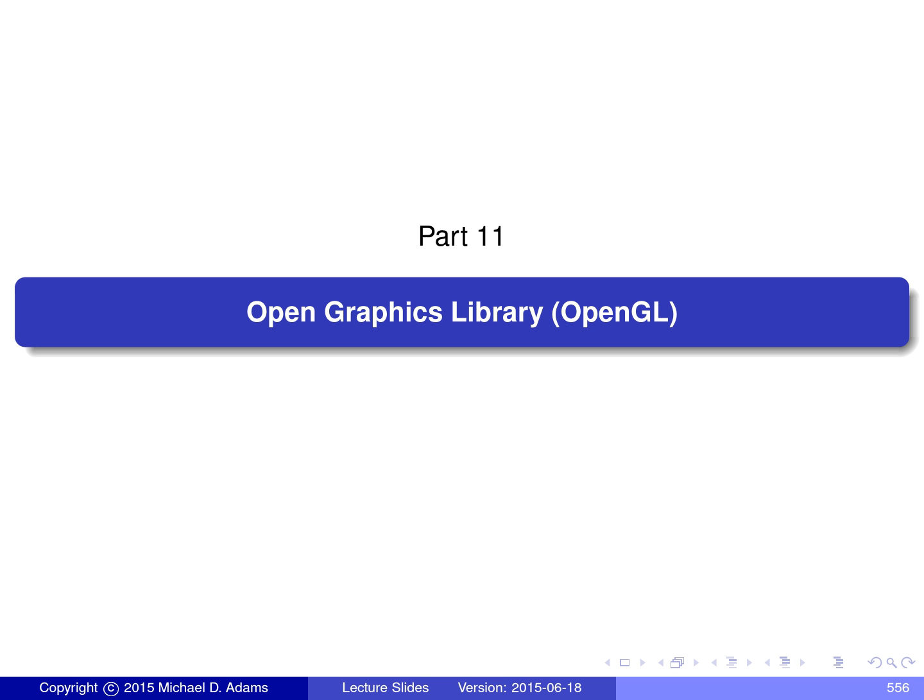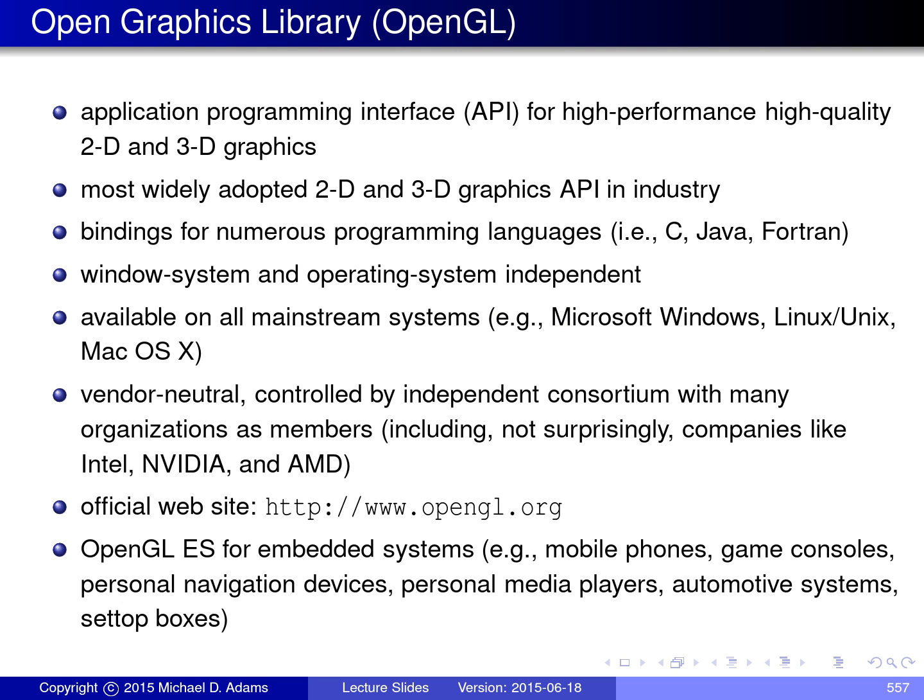In this part of the presentation, I'm going to give an introduction to the open graphics library, which is better known by the name OpenGL. OpenGL is an application programming interface for high performance, high quality 2D and 3D graphics. It's a de facto standard in industry, supported by all major vendors, with bindings for numerous programming languages including C, Java, and Fortran. In this presentation, I'll be focusing exclusively on the language binding for C.